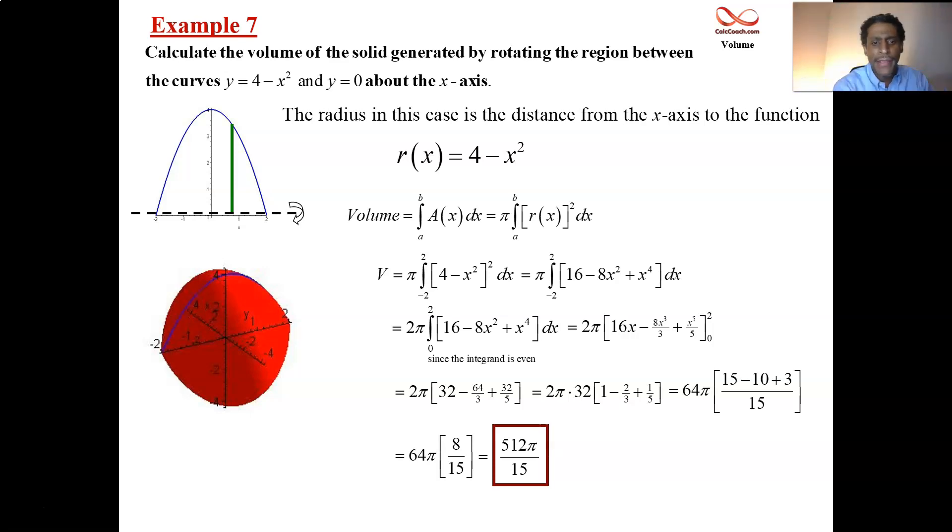You should finish with the answer of 512 pi over 15. If you didn't get that, go back and check the steps. There might be something that you can get out of the way I did it. You don't have to do it that way. But whenever you notice that the integral goes from minus a to a and the inside function is an even function, instead of going from minus a to a, you can go from 0 to a and you can double. The area on the volume on the right and the volume on the left should be the same thing. Take advantage of that symmetry.